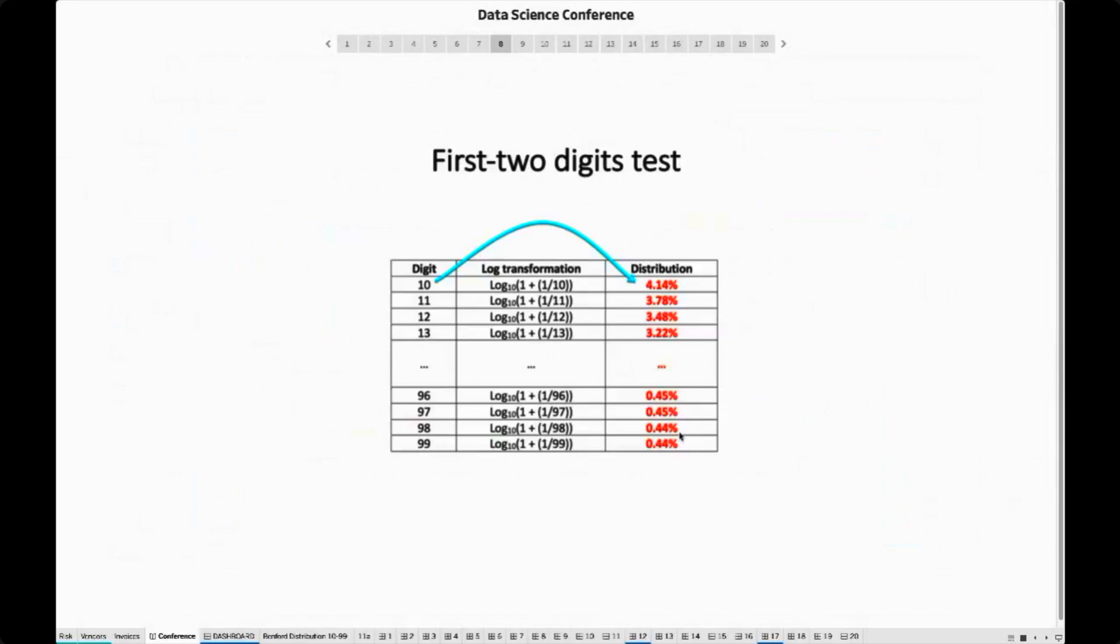And as a side note, if you Google Benford's law, most of those articles are about Benford's version covering digits one to nine. However, in this case, we are using a more advanced version, which observes the digits 10 to 99.